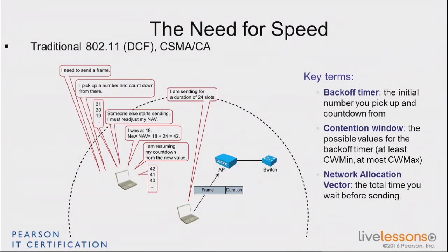So you pick a random number within a certain range and count down from that number at the speed of a slot. If at any time while counting down you hear somebody send, you stop counting, wait for that other frame to pass, and then resume counting from where you stopped — say you stopped at 18, you continue 17, 16 — and you do that every time you hear somebody else sending traffic.